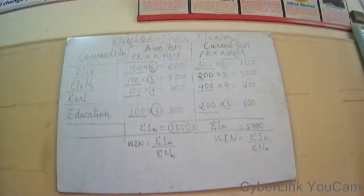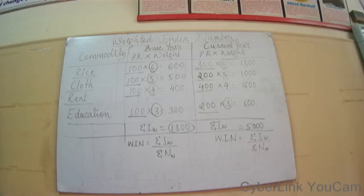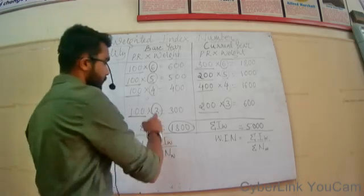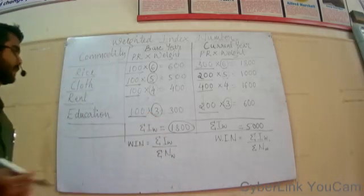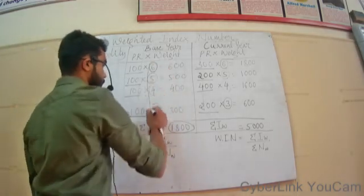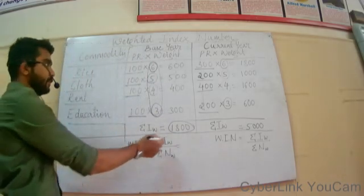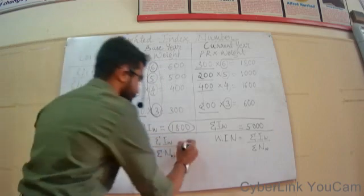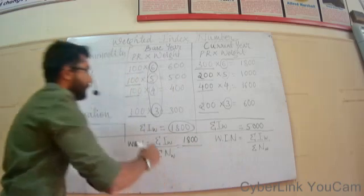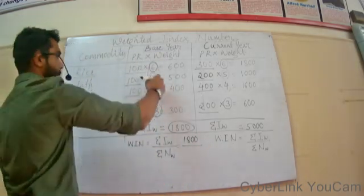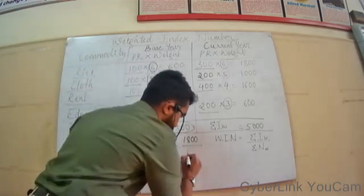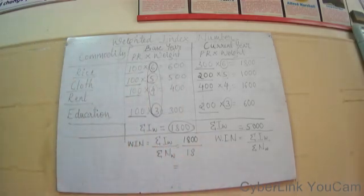Now we have to use the formula for calculating weighted index numbers. The weighted index number is equal to the summation of weighted index numbers divided by the total number of weightages. The total of all weightages given to the respective commodities is 18. So for the base year: 1800 divided by 18 equals 100. The weighted index number for the base year is 100.